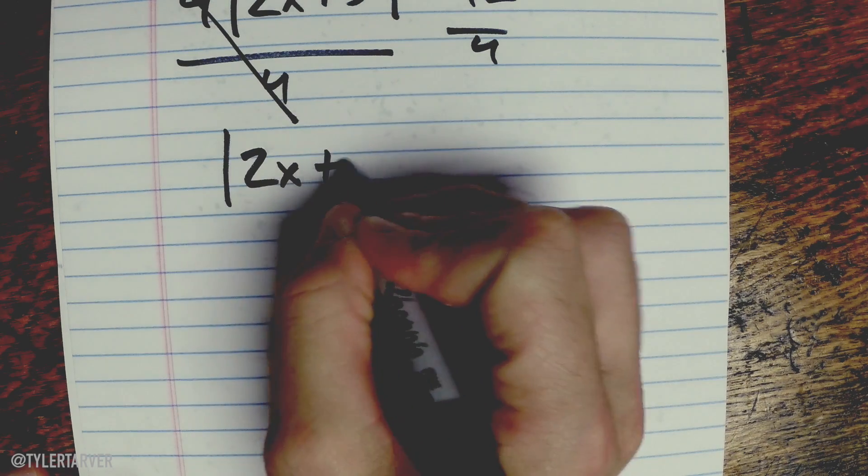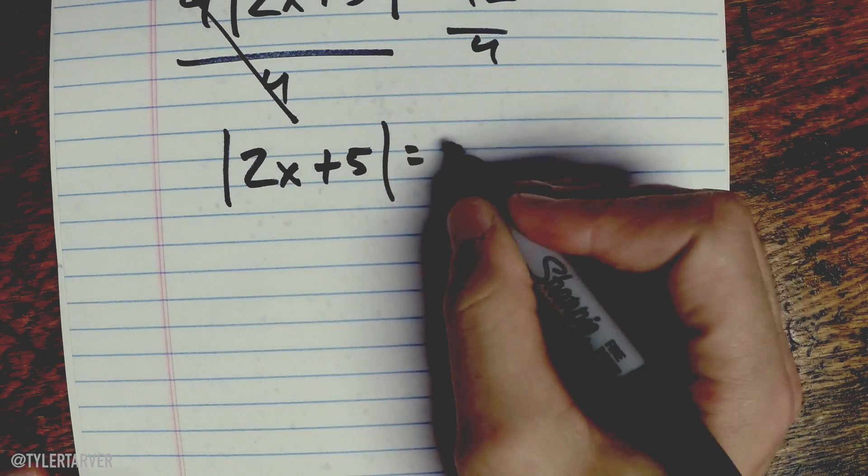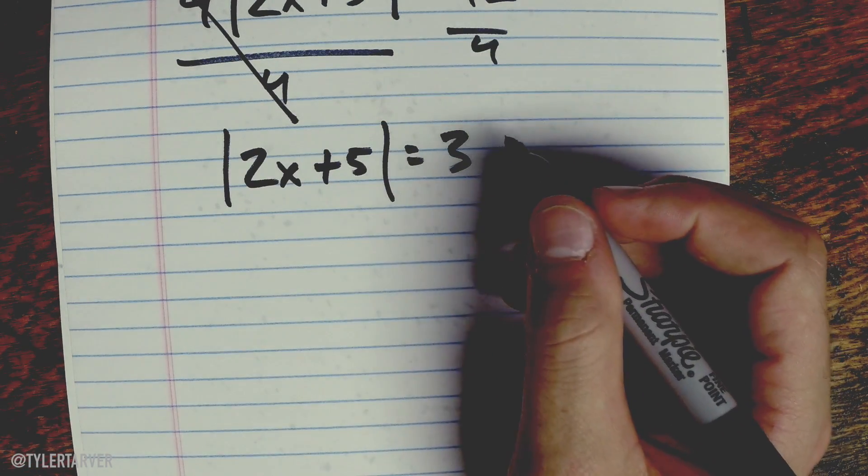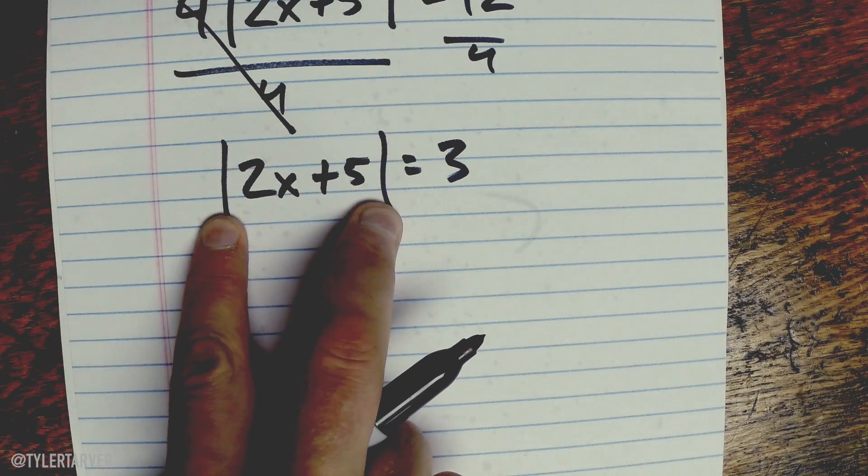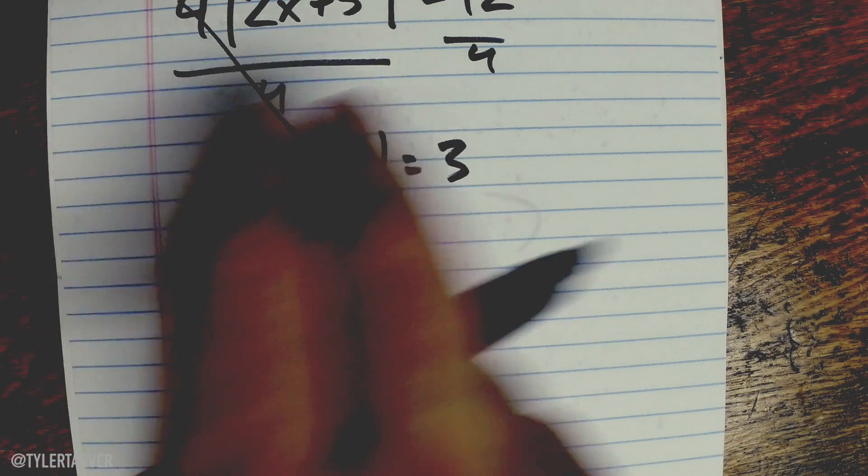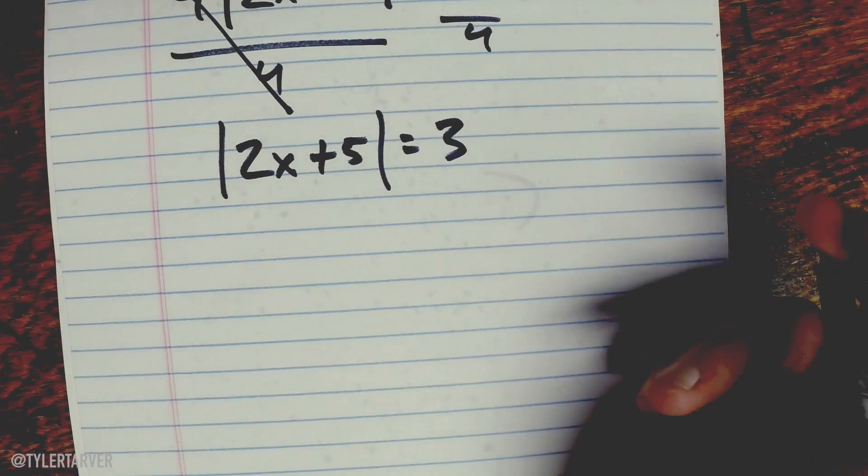We've got absolute value 2X plus 5 equals 3. Now what we're gonna do is we have to, essentially, to drop this, we have to give both possibilities of what could happen over here with this three.